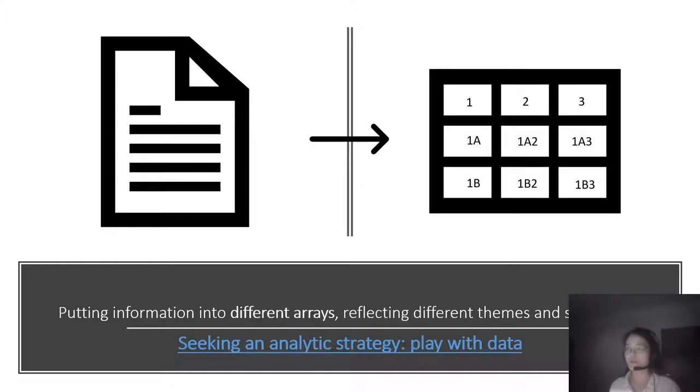The second way is to put information in different areas, which actually reflect different themes and sub-themes. Let's say, we still use interview transcript as example. And you preset, predefined some themes and sub-themes. And you now just assign different contents from the transcript into the predefined themes and sub-themes as you can see from the right side of the slide.